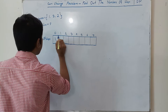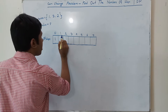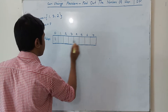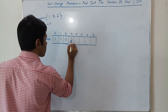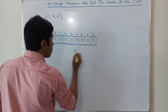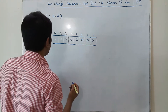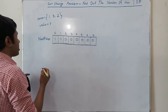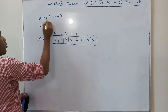If we don't have any coin, then we cannot make the values 1, 2, 3, or 7, so those values will be 0. This is our base case. Now we will find out the number of ways when we have coin 1.